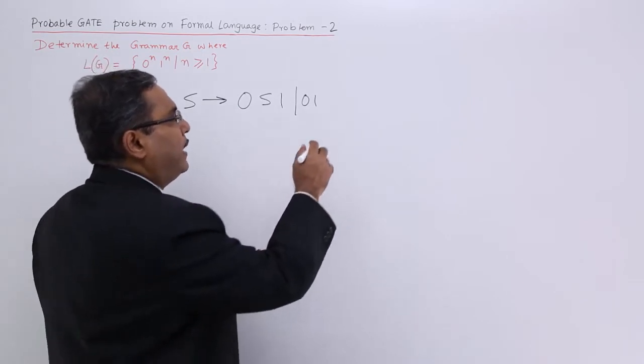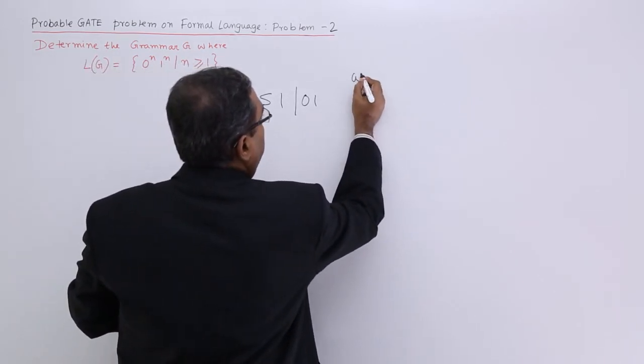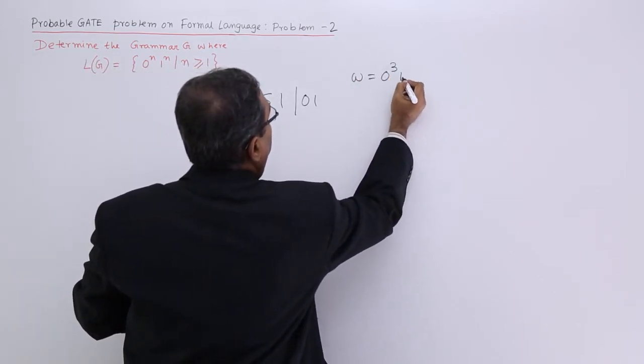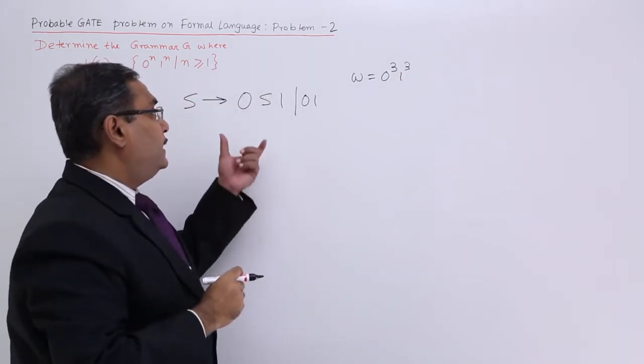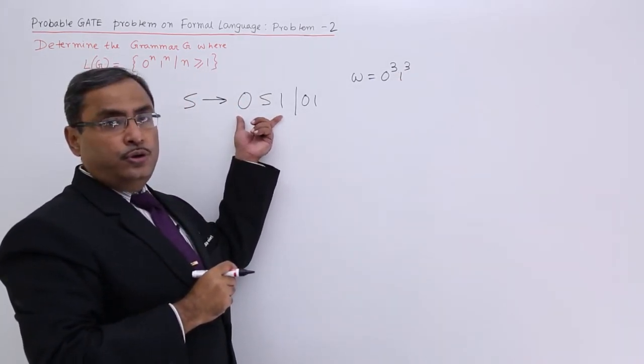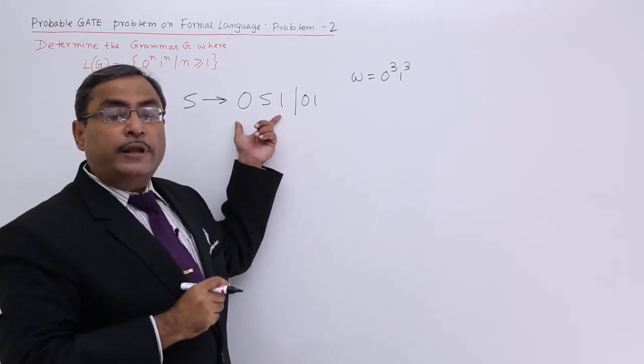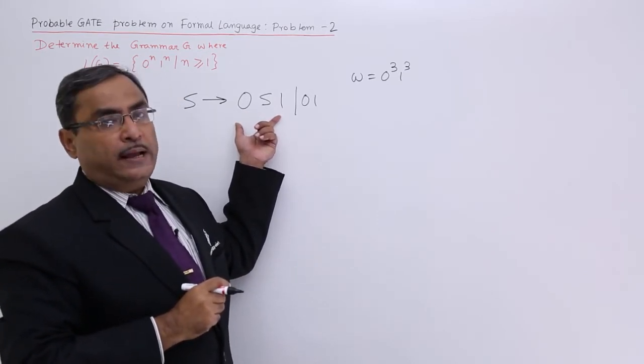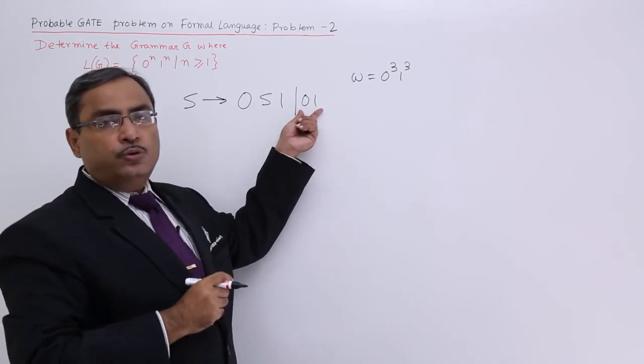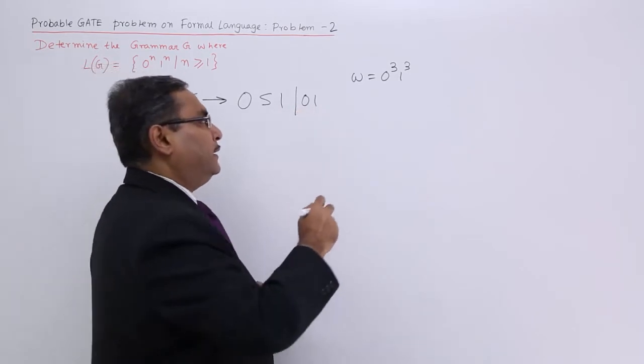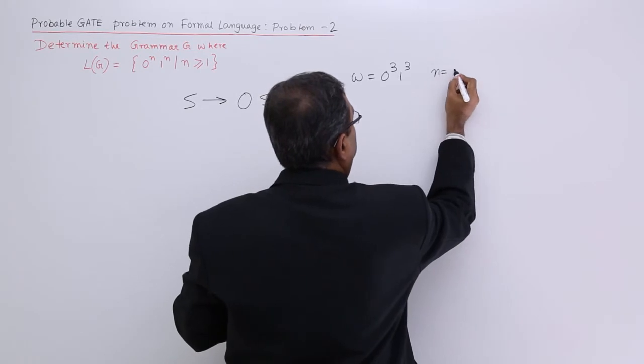Let us suppose the string is equal to 0 cube 1 cube. That means this production rule S produces 0 S 1 will be applied for n minus 1 number of times, and this production rule will be applied at the last for 1 time. That means here n is equal to 3.